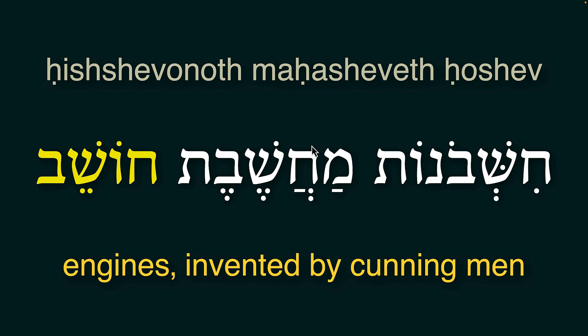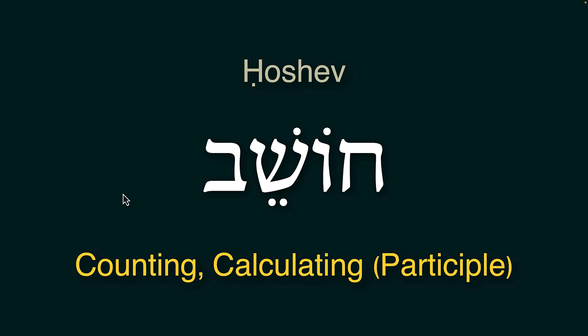Hishavonoth, Makhshavet, Khoshev — let's come to the final word, Khoshev. It is a participial verb from the root Kheth-Shin-Bet, so you add -ing: counting, calculating, reckoning. That is the meaning of Khoshev.